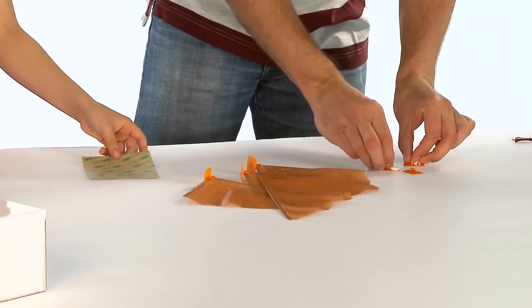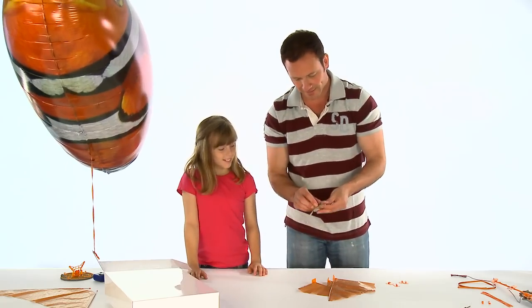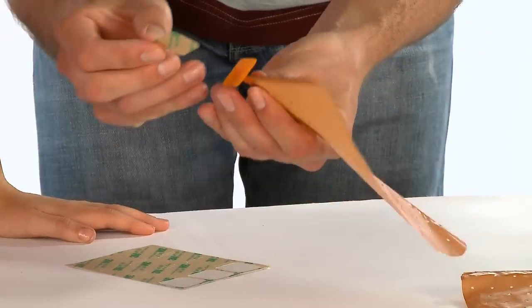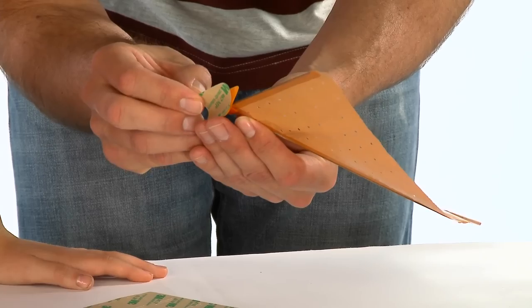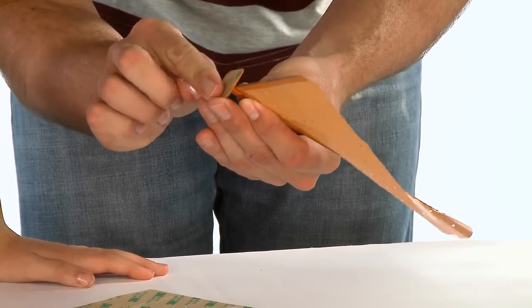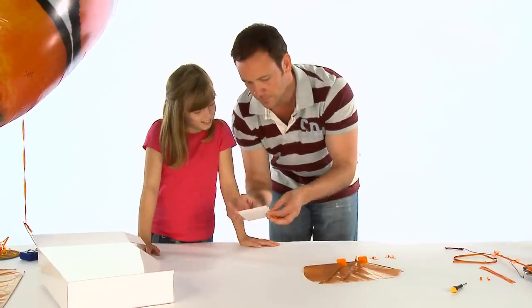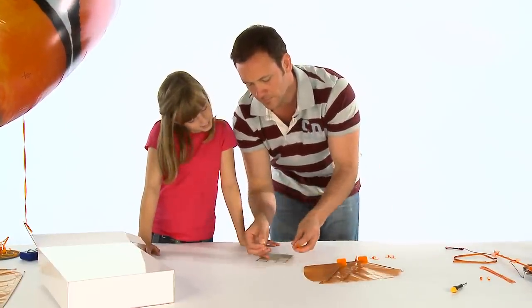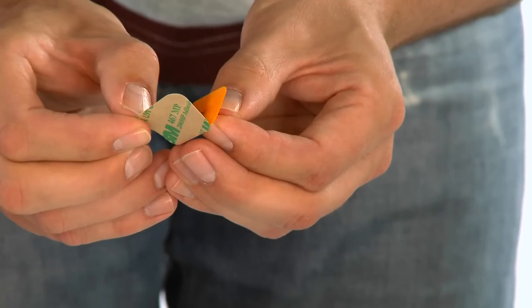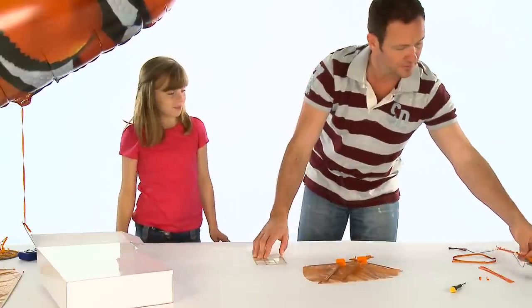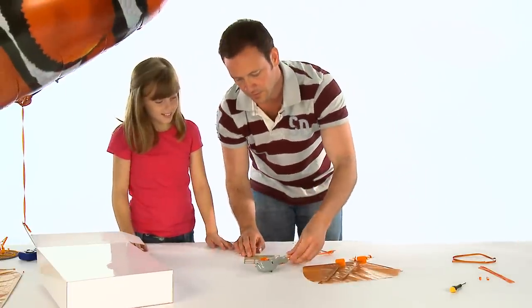Once your Airswimmer is inflated, you need to attach all the sticky pads. Peel each sticky pad from the sheet and place one onto each of the fin and hook attachments. Repeat for the pod track. Make sure the backing sheet stays attached so that the pieces do not accidentally stick to anything until you are ready.